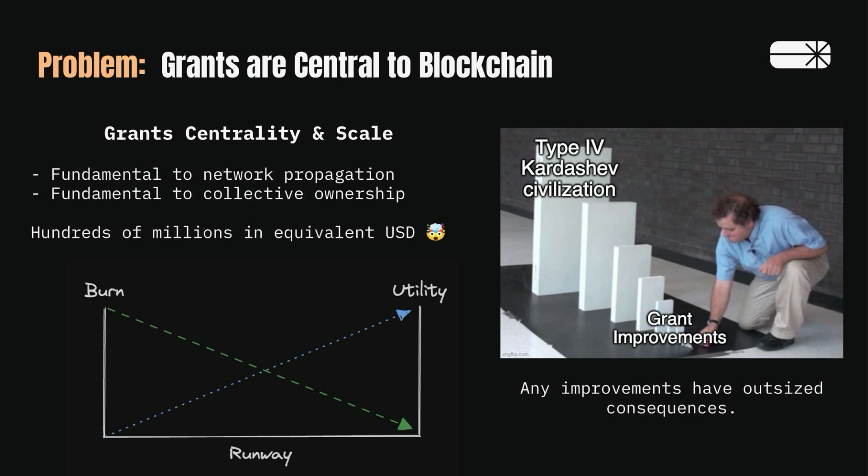This makes the difference between actually being solvent in four years or being irrelevant. Given the amount and impact of this stuff, this is the heartbeat of blockchain, of DAOs. If we don't get this right, then you're dead. Any small improvement to grants leads us toward type four Kardashev civilization — optimum utilization of all energy in the solar system. Certainly an overstatement, but maybe not.